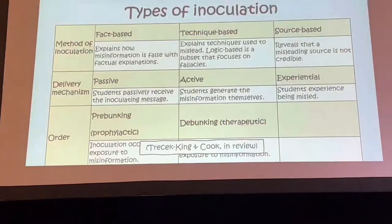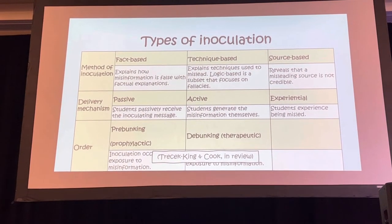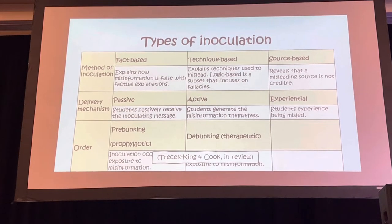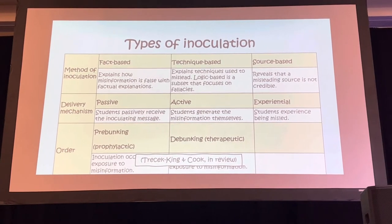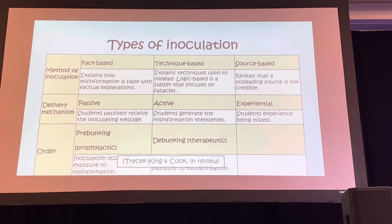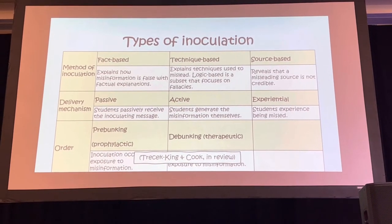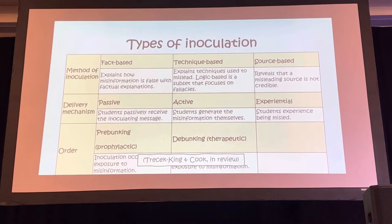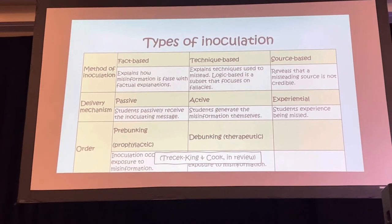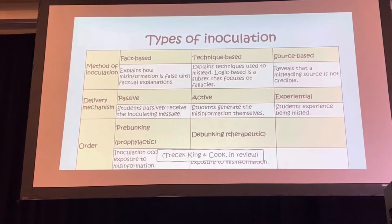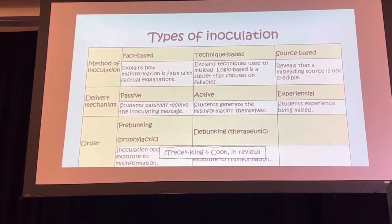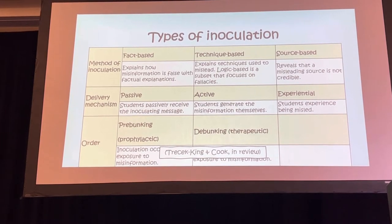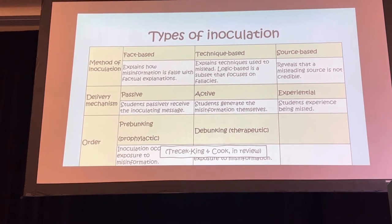This is a table from a paper that John Cook and I have authored, with the intention of proposing a new type of inoculation and clarifying definitions of different types. There's fact-based inoculation, which explains why the facts in the misinformation are wrong. Technique-based explains the techniques used to mislead. Logic-based focuses on logical fallacies and rhetorical techniques. Source-based focuses on the credibility of the source. We can deliver it passively — explaining the misinformation — or actively. And it can be done either before misinformation, which is pre-bunking, or after, which is debunking. We also add humor versus non-humorous, because humor really works.